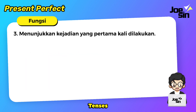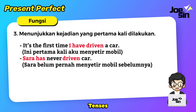Fungsi yang ketiga adalah menunjukkan kejadian yang pertama kali dilakukan. Banyak English learners yang membuat kesalahan dalam fungsi ini. Contohnya: it's the first time I have driven a car — ini pertama kali aku menyetir mobil. Ada kata have lalu kemudian driven. Contoh kedua: Sarah has never driven a car — Sarah belum pernah menyetir mobil sebelumnya. Is it clear? That's good.